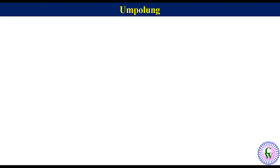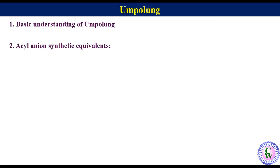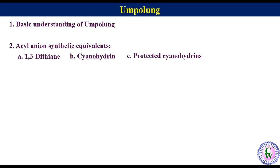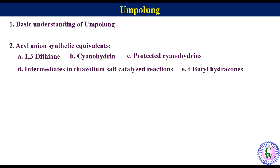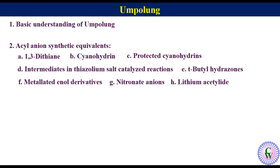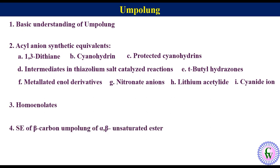We will discuss the following points: basic understanding of umpolung, acyl anion synthetic equivalence. Under this head we will discuss 1,3-dithiane, cyanohydrin, protected cyanohydrin, intermediates in thiazolium salt catalyzed reactions, t-butyl hydrazones, metallated enol derivatives, nitronate anions, lithium acetylide and cyanide. Next point will be homoenolates, and finally synthetic equivalence of beta-carbon umpolung of alpha-beta unsaturated ester.